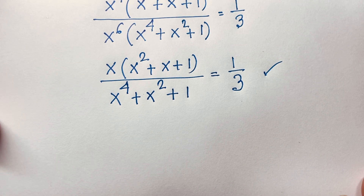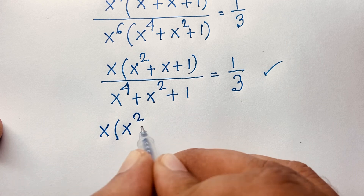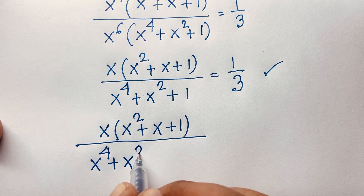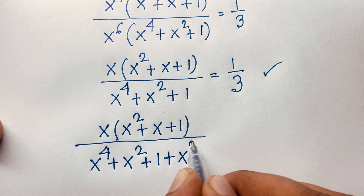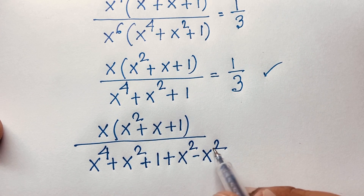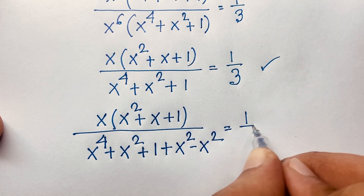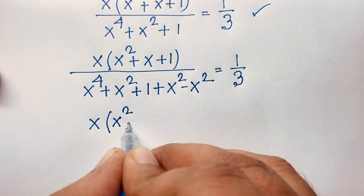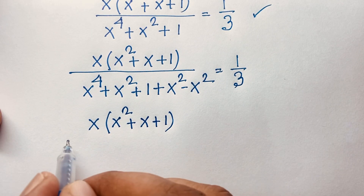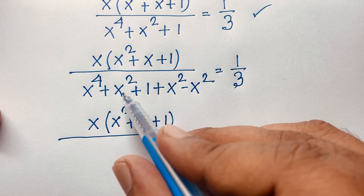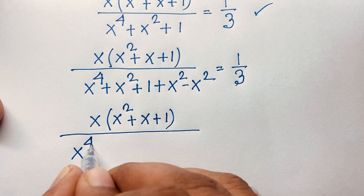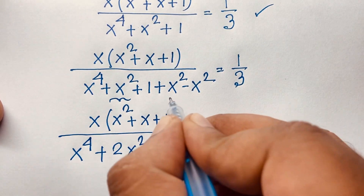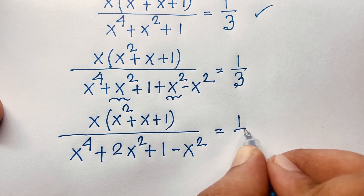Now I add and subtract x squared in the denominator. So the denominator x to the power 4 plus x squared plus 1 can be rewritten as x to the power 4 plus 2x squared plus 1 minus x squared. Adding the two x squared terms gives 2x squared, and the expression still equals 1 over 3.